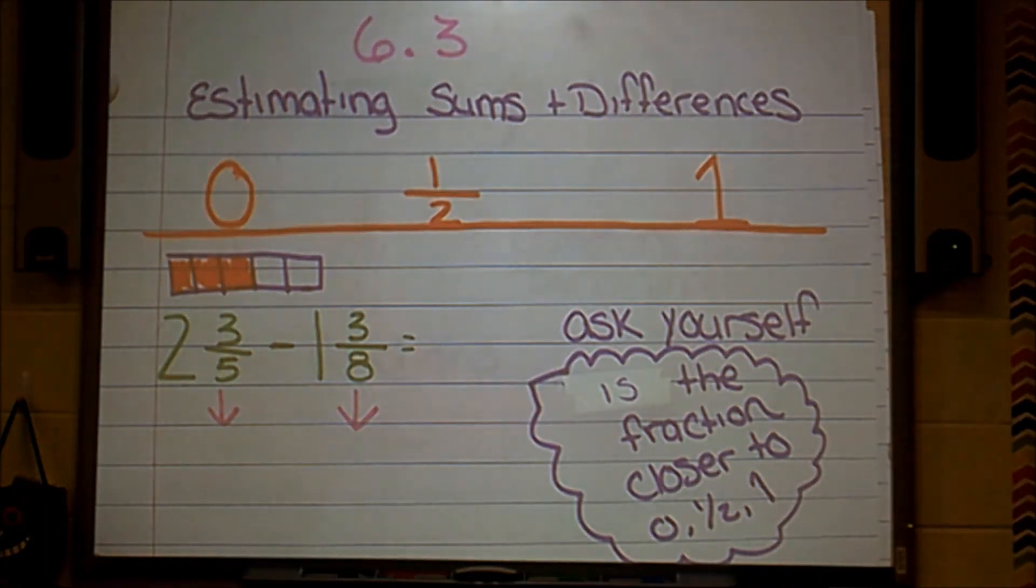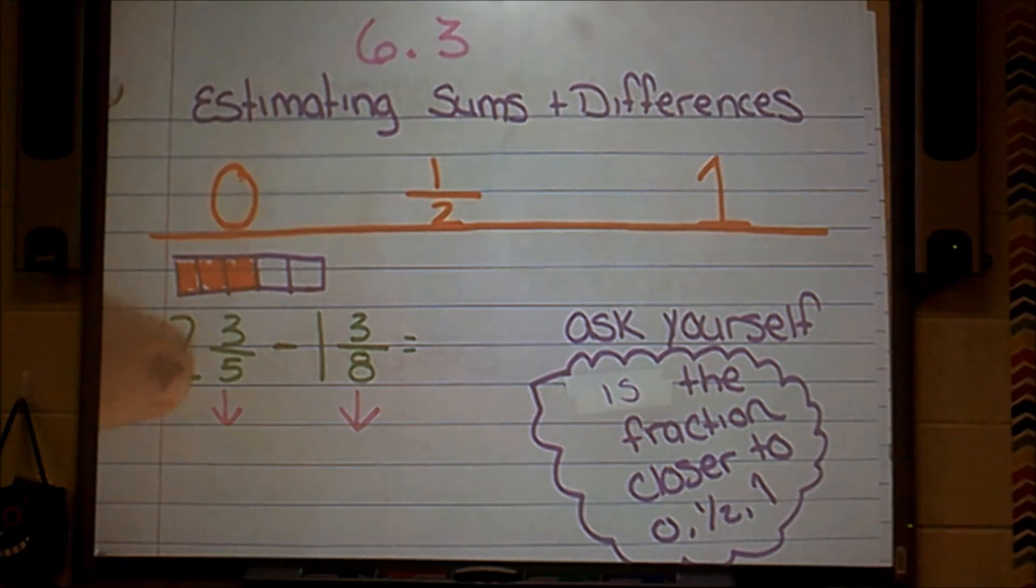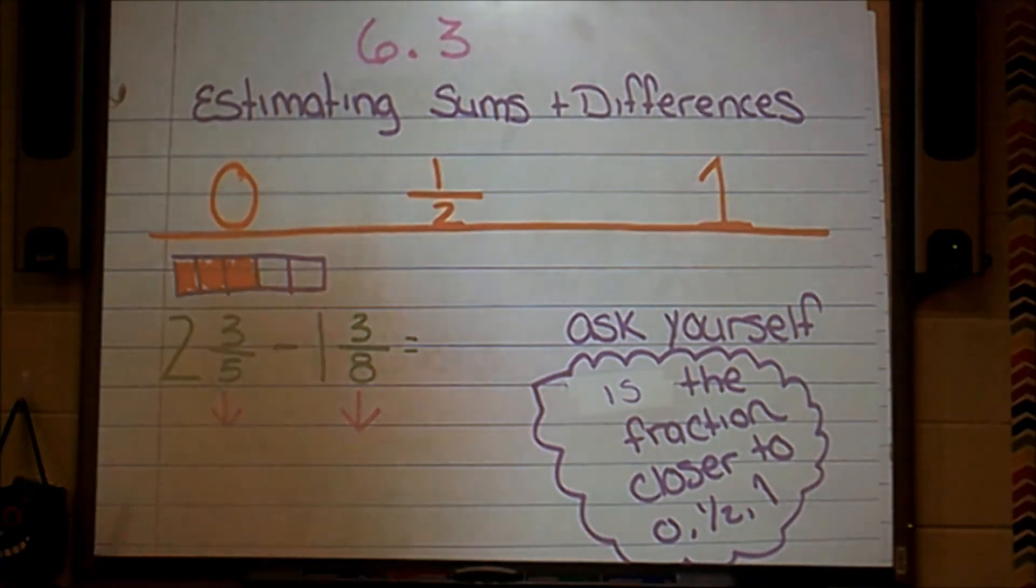Now in your brain, ask yourself, the amount that is colored in, is that really close to 0 or nothing being colored in? Is it really close to halfway colored in? Or is it really close to all, the whole entire fraction bar being colored in? I agree. It's a little bit more than half. So I can estimate this fraction 3 fifths to be about a half.